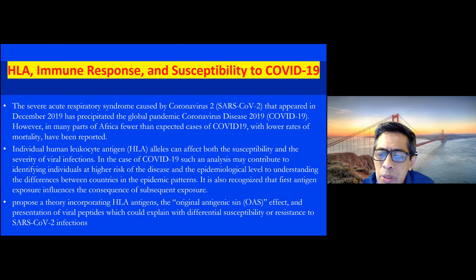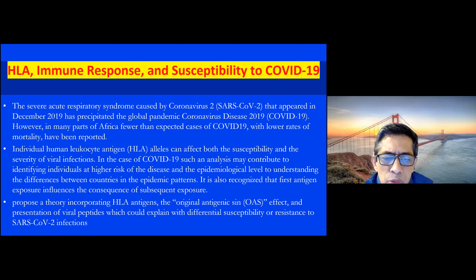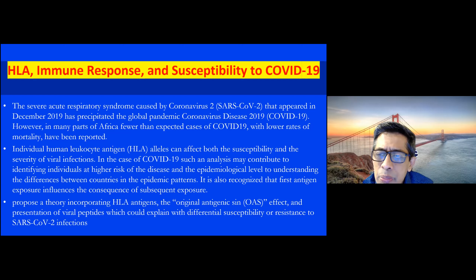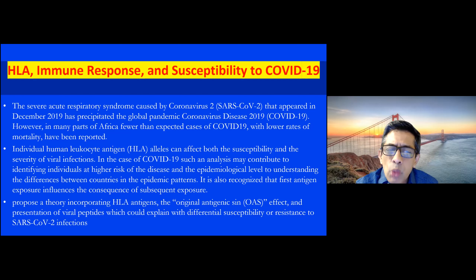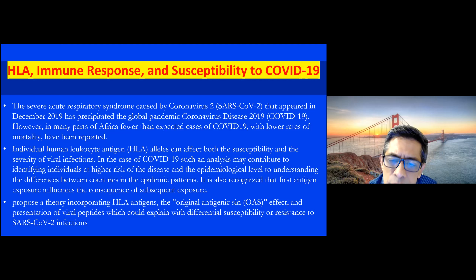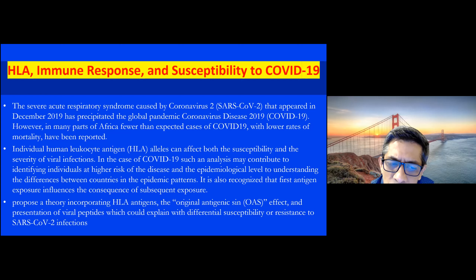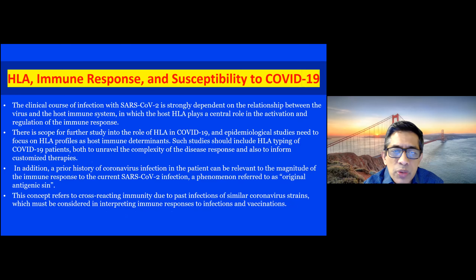It is recognized that the first antigen exposure influences the consequence of subsequent exposure. For example, people of South Asian ancestry probably have a lower predilection to severe disease, and this was a theory which proposed that incorporating HLA antigens, the original antigenic sin or OAS effect in presentation of viral peptides, could explain the differential susceptibility or resistance to SARS-CoV-2 infections.